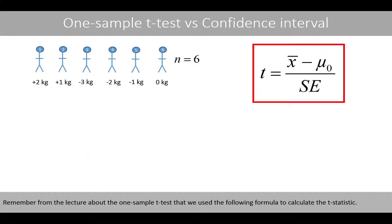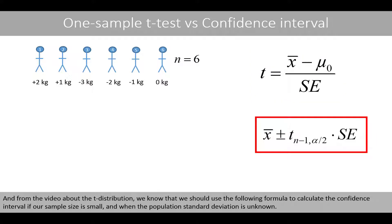Remember from the lecture about the one-sample t-test that we used the following formula to calculate the t-statistic. And from the video about the t-distribution, we know that we used the following formula to calculate the confidence interval when our sample size is small and the population standard deviation is unknown.